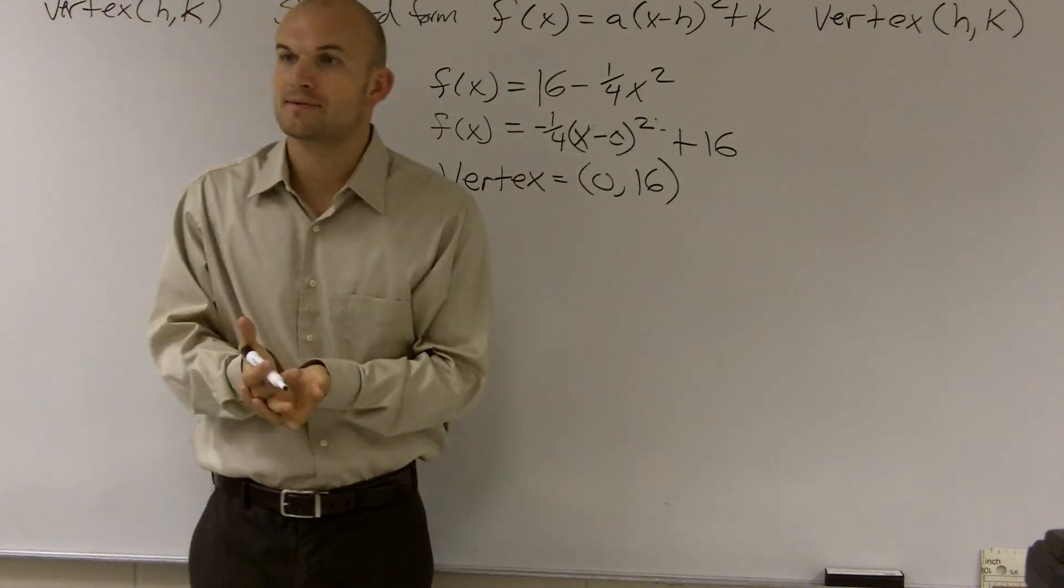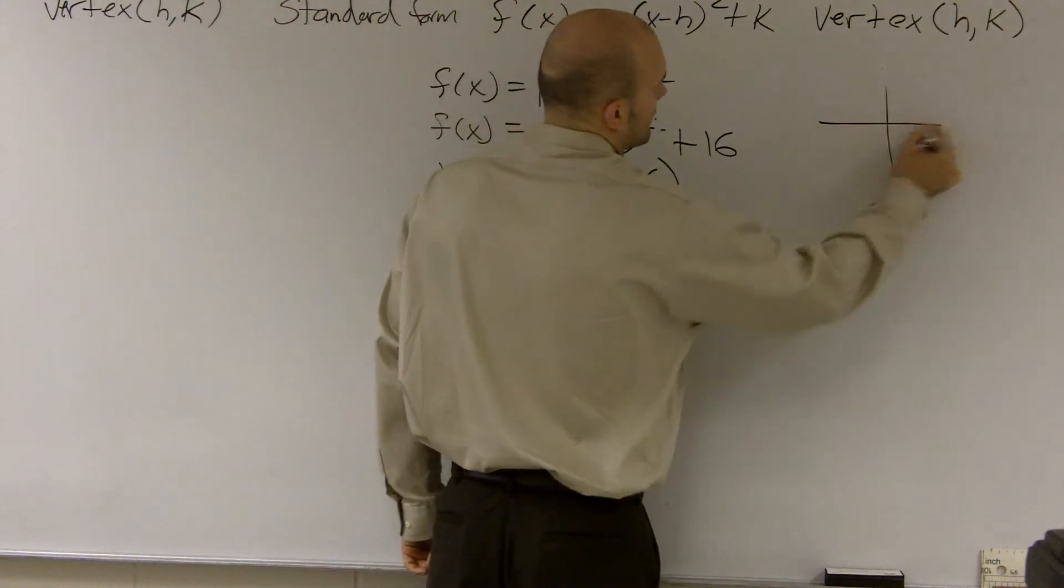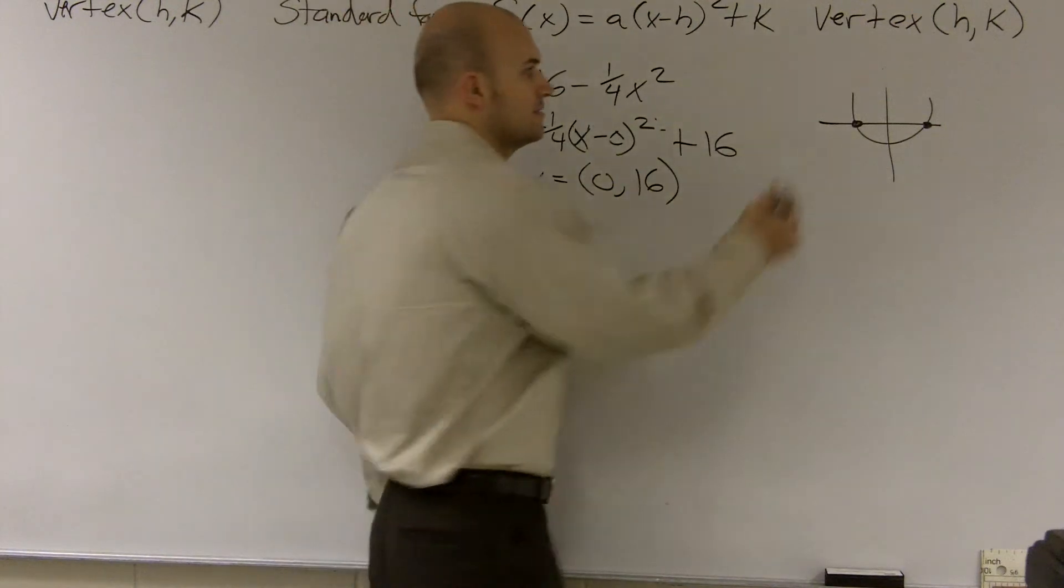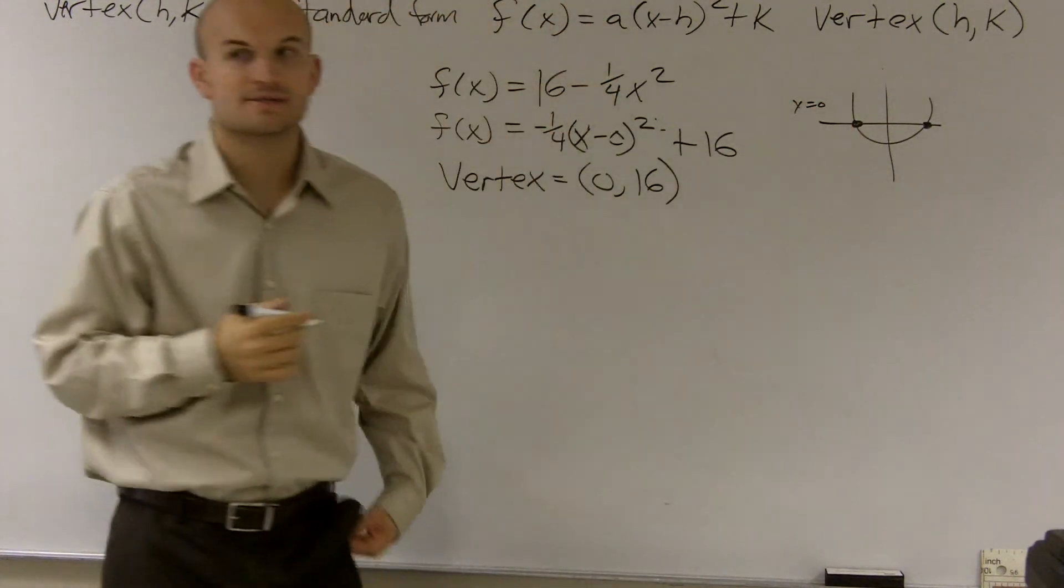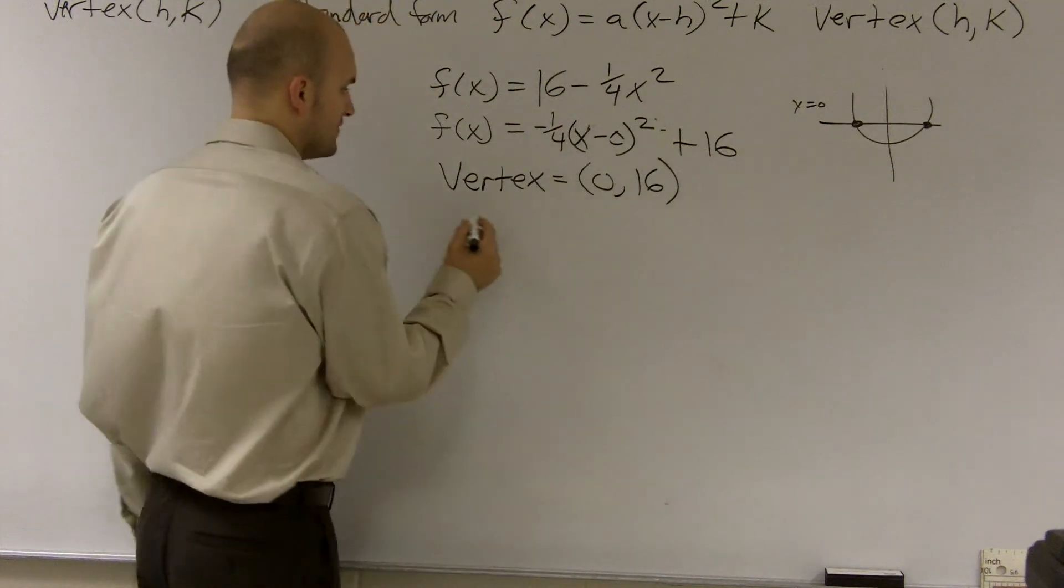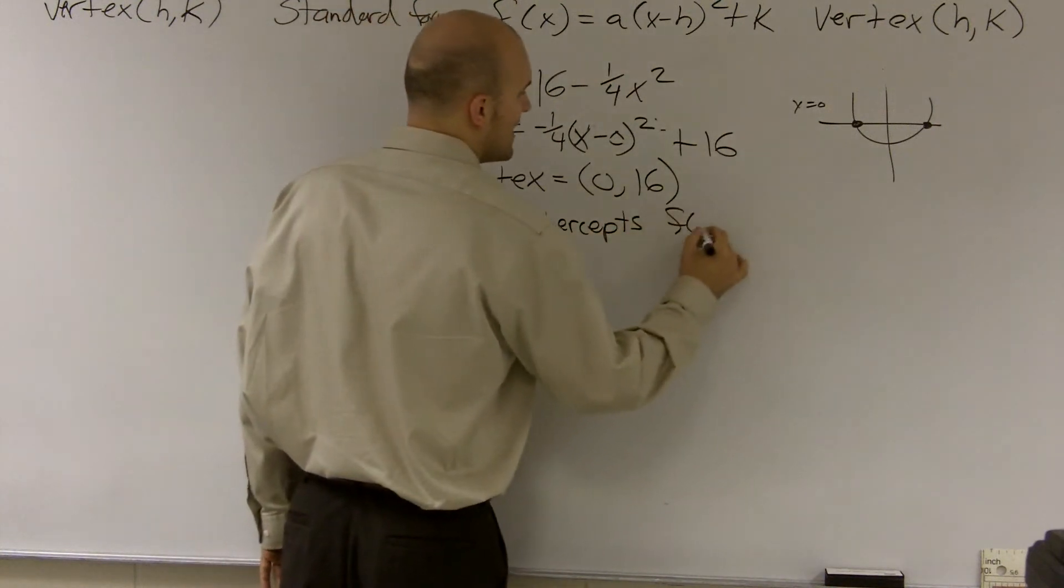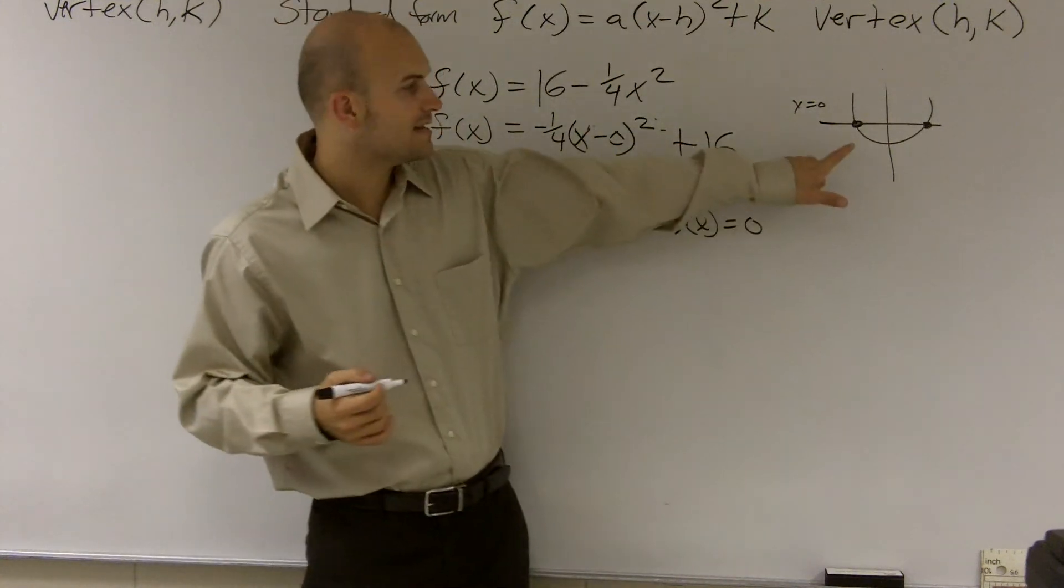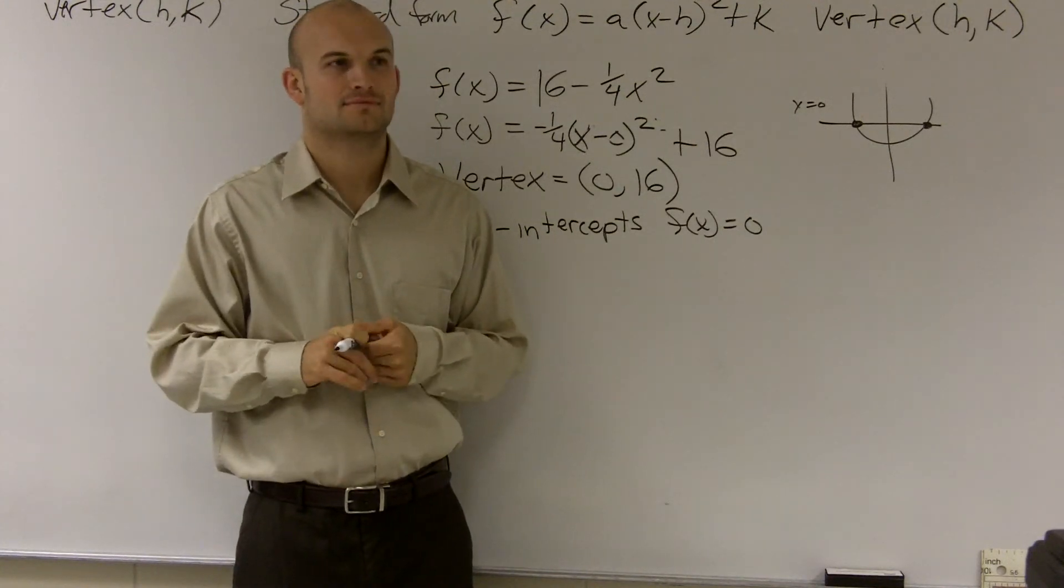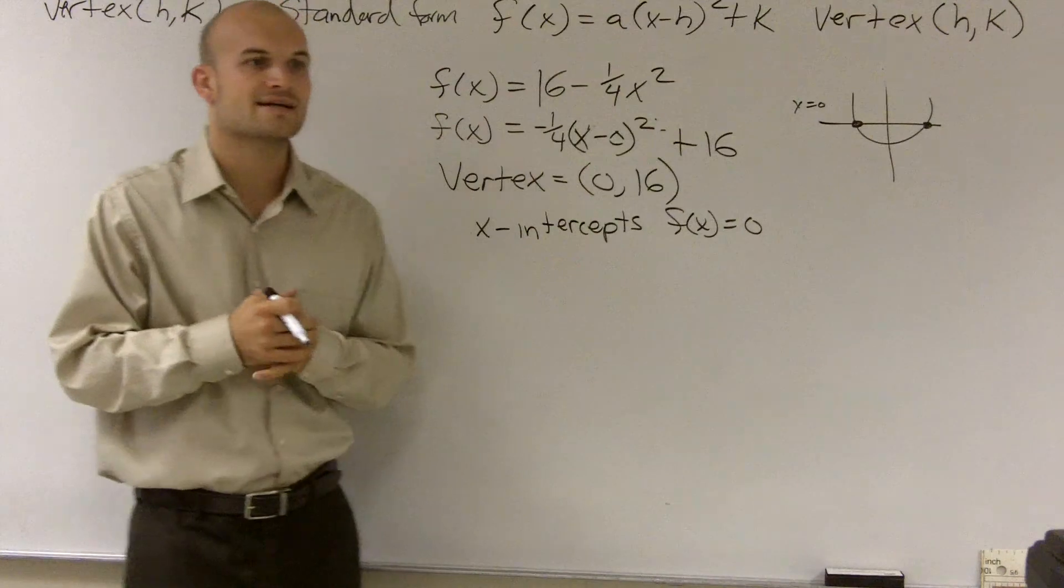Then the next thing is we need to determine what are the x-intercepts. So on a graph, real quick, when you have your x-intercepts, remember our value of y is equal to zero. y equals zero for those two points. So what we're going to have to do is we're going to have to determine, for a function, our y-value is the same thing as our f(x)-value. So when you want to find the x-intercepts, we know that our f(x), which is our output value, is going to equal zero, which is the same thing as y equals zero.